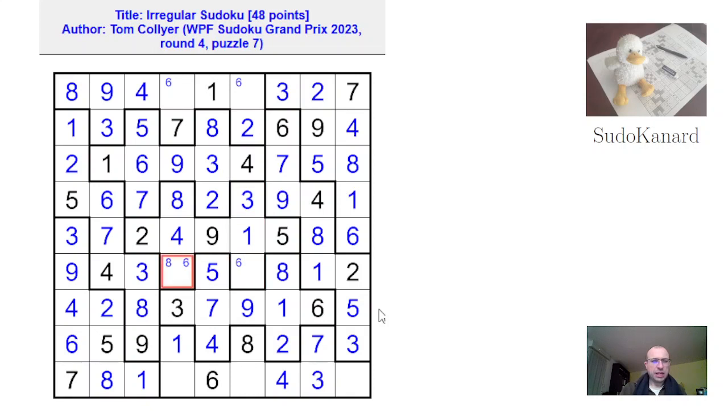Here, I need 6 and 7. So that's 6. That's 7. This column still needs a 6. It's definitely not here. So that's a 5. That's a 6. That's a 5. That's a 2. And that's a 9.